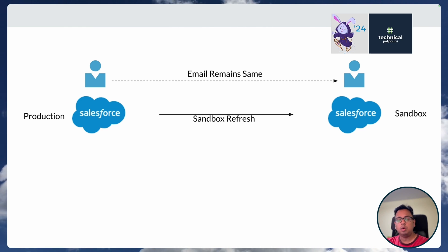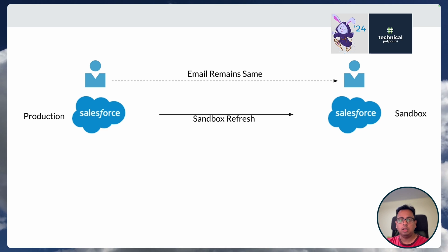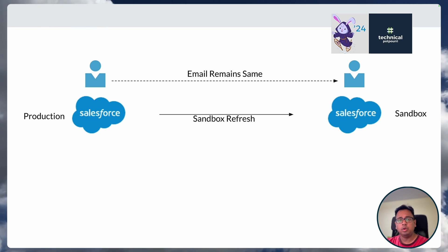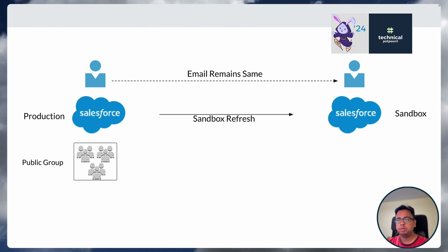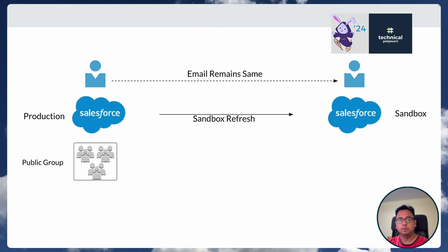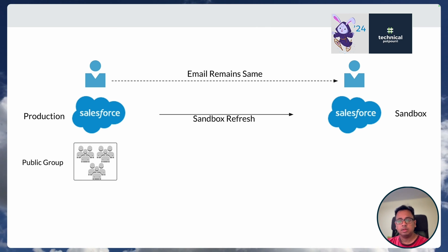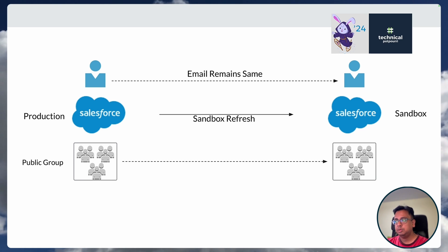Now, we want only a few users from the production org to have access to the sandbox — we don't want all users to have access. Let's say in production we have 100 users, and out of those 100, we only want 10 users to have access to the sandbox. With Winter 24, you can do that. What you need to do is create a public group, add those 10 users to the public group, and when the sandbox is refreshed, those 10 users will automatically get access through the public group.